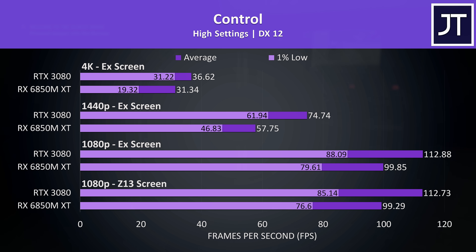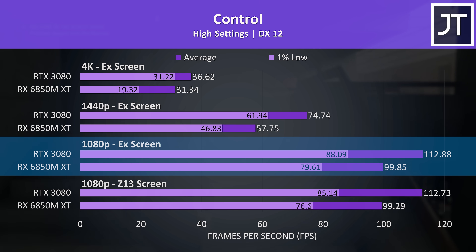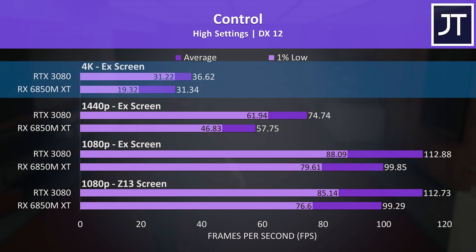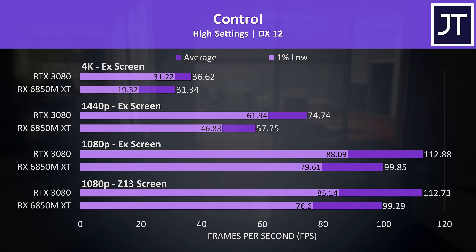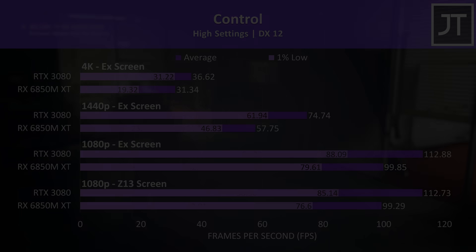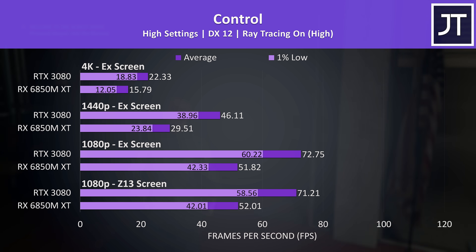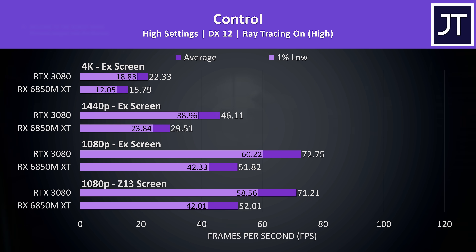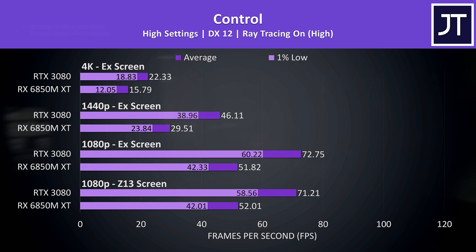Control is a game that typically does better on Nvidia hardware. The 3080 was reaching a 13% higher average frame rate at the lower 1080p resolution, 29% higher at 1440p, but then a lower 17% lead at 4K. The 1% low from the 3080 was near the 6850M XT's average FPS. This game has DLSS support which could further boost 3080 performance. With ray tracing enabled the performance gaps get even larger — the 3080's 1% lows are higher than even the 6850M XT's averages at all resolutions.